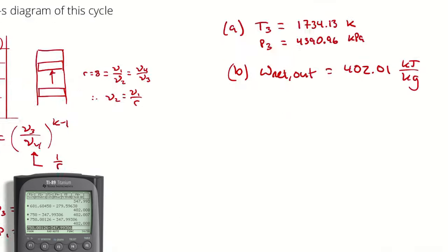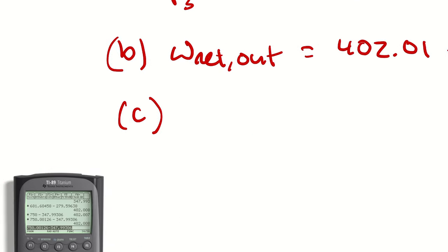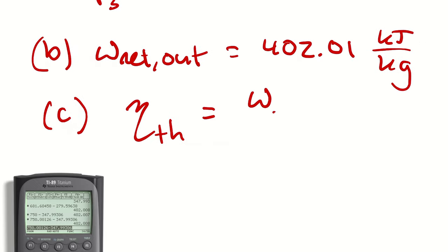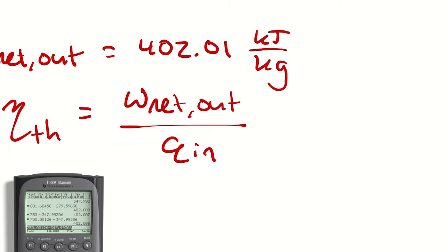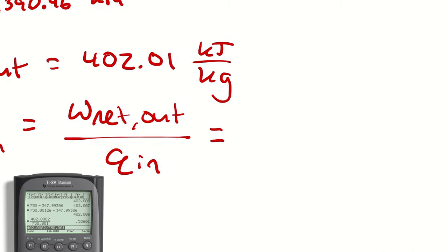Part C: thermal efficiency of this power cycle is network out divided by heat transfer in = 402.01 / 750 = 53.6%.